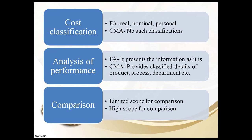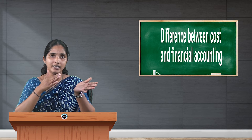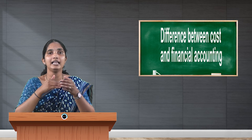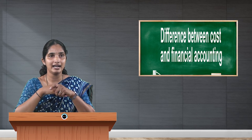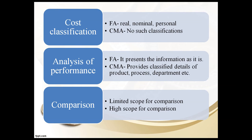Then, analysis of performance. Financial accounting presents the information as it is — what has been done is given to outside users. Whereas cost and management accounting classifies detailed information according to product, process, or department.